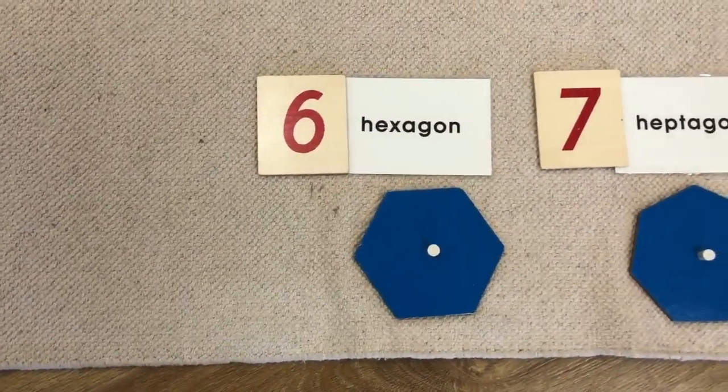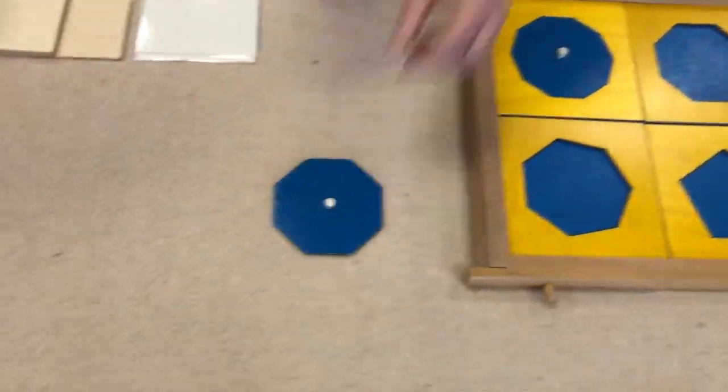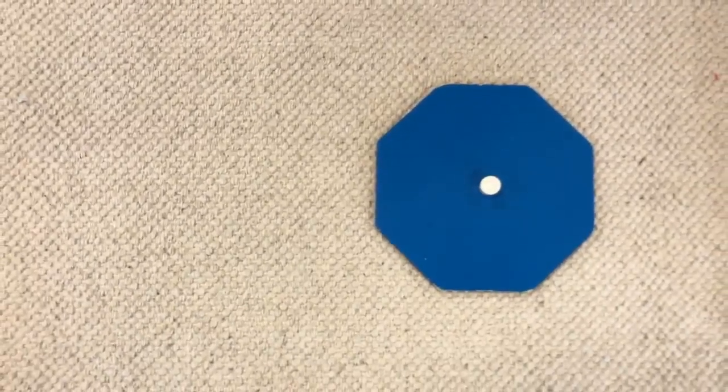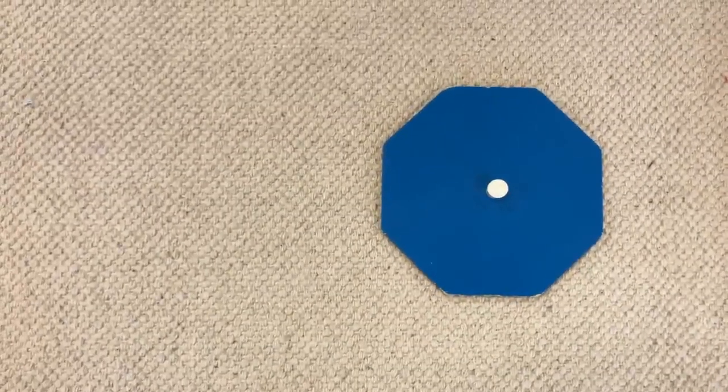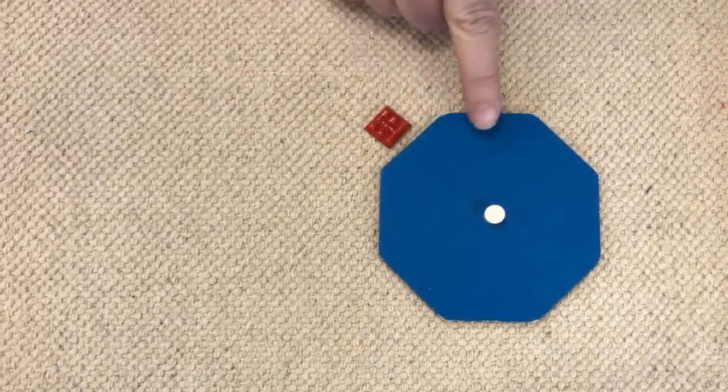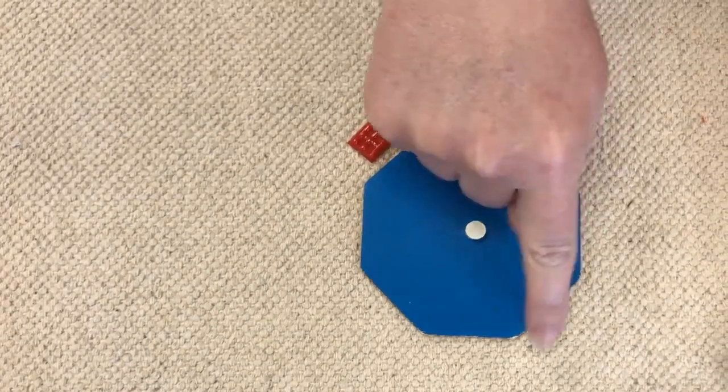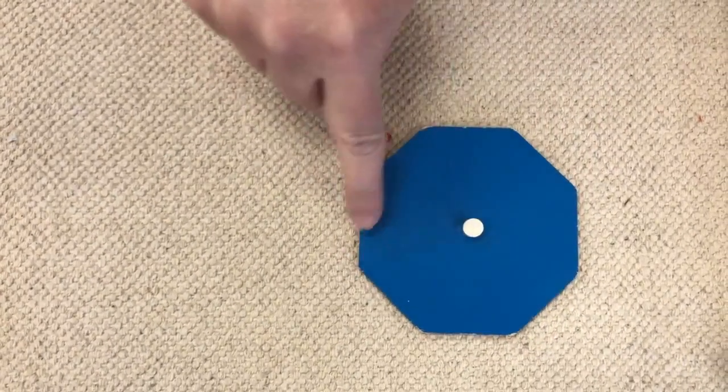And we'll look at a different polygon. This is one you've probably seen before. You might already recognize it as something that you see on the street when it's time to stop. One, two, three, four, five, six, seven, eight.